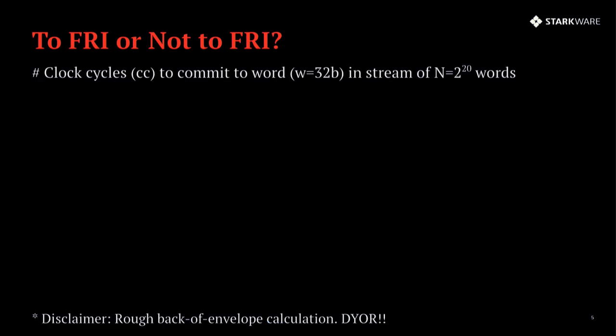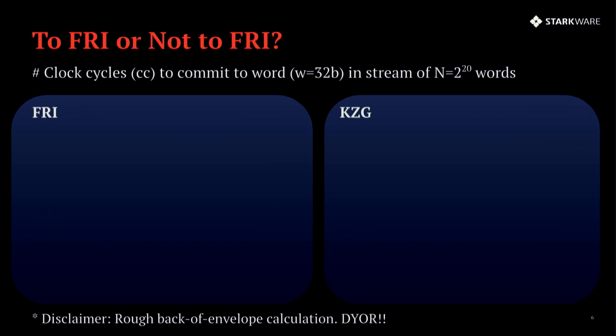And why is this so? You could consider the efficiency of one of the main bottlenecks in constructing a proof, which is to do a polynomial commitment scheme. And we can do a head to head competition, measuring the number of clock cycles to commit to a word, a word being 32 bits inside a stream of length roughly one mega word, so 2 to the 20 words, that's roughly a million words. And now we can measure the load in the commitment scheme per each word.